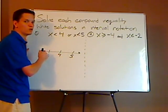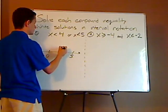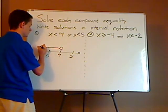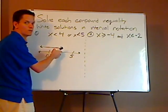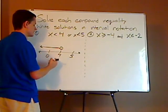Now draw each one separately, so this is x less than 4, so it's starting at 4 and it's everything less than it, so it's going to go that way. And I'm using an open circle because there's no or equal to here, so 4 is not included.